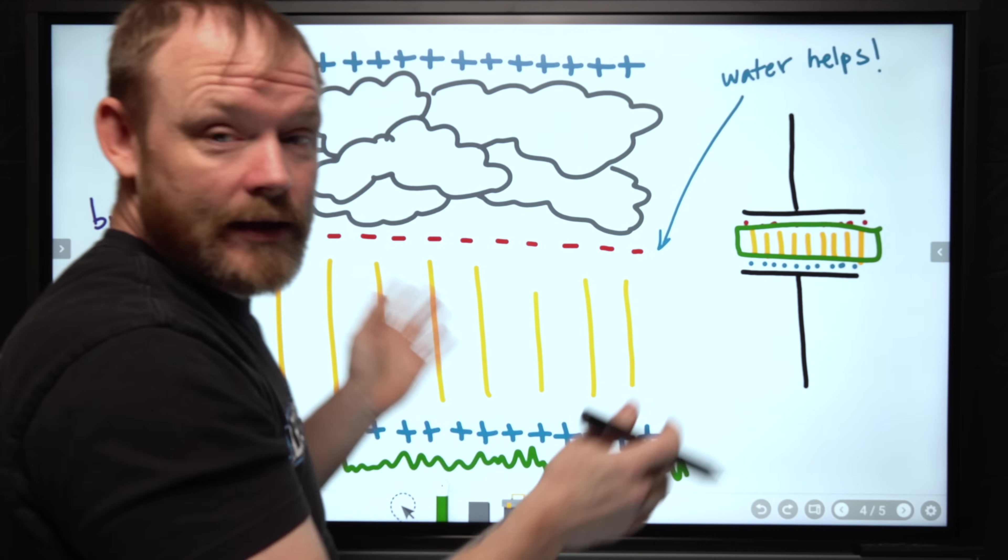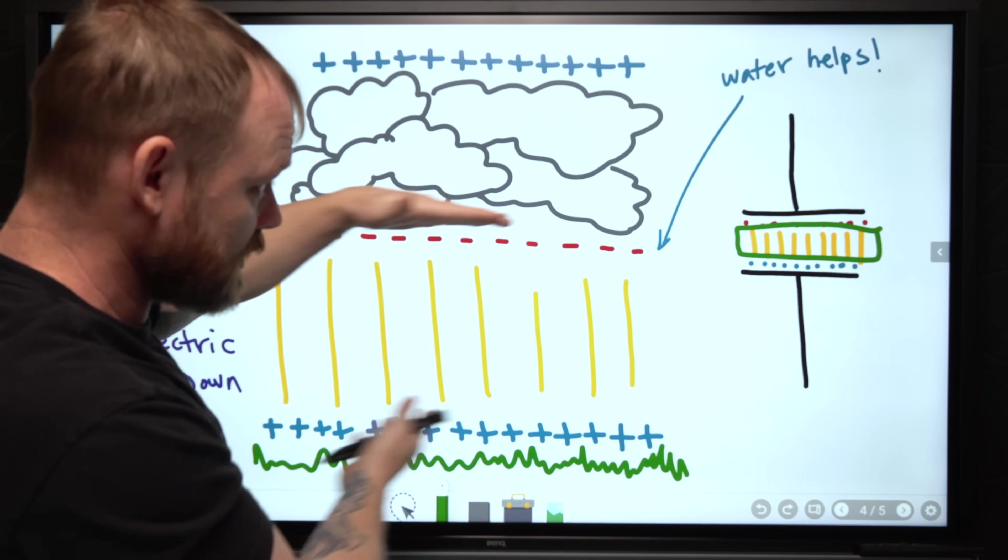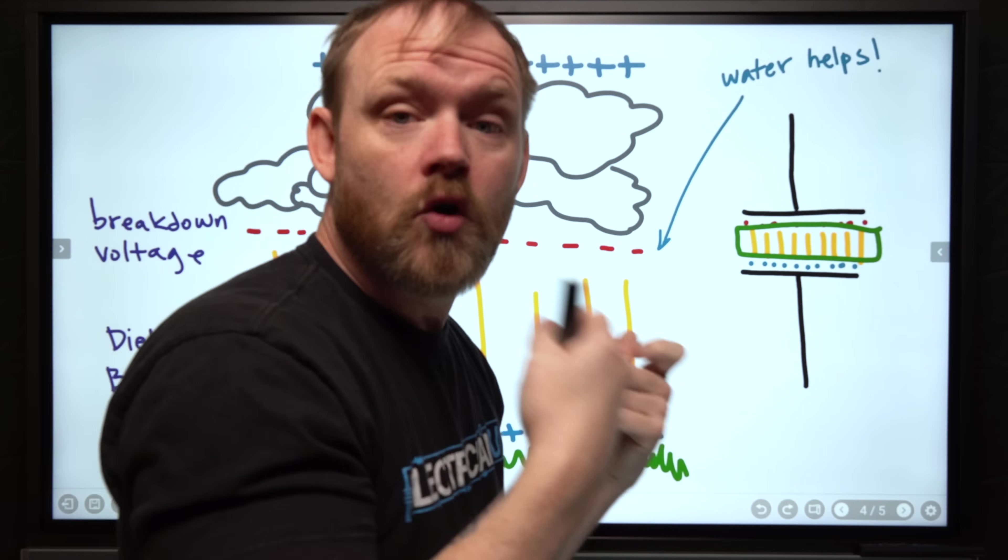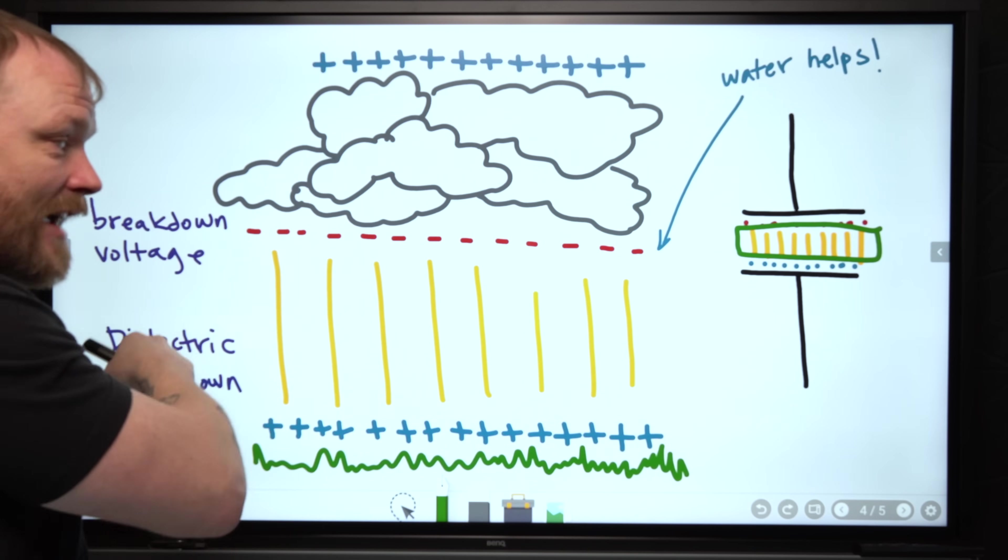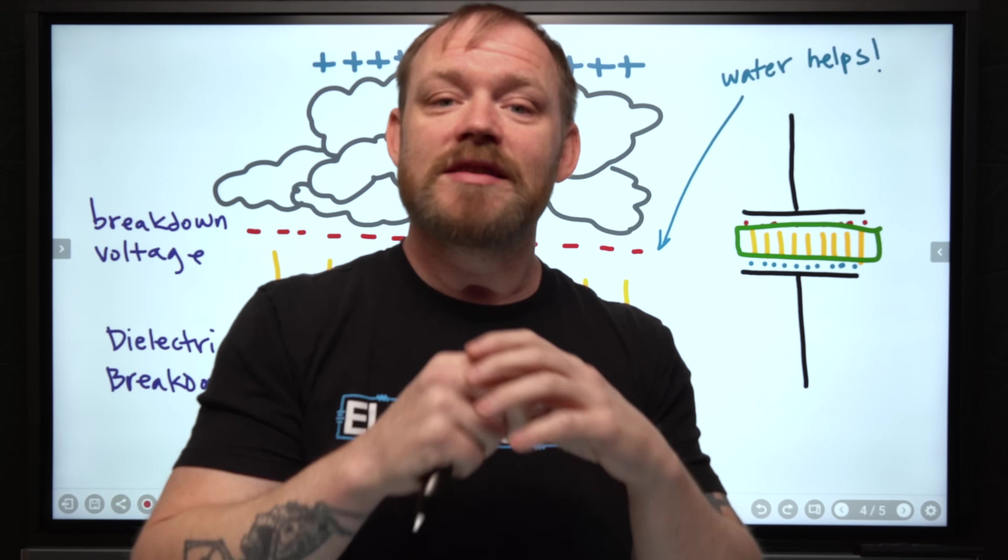With air though, we don't have this solid material insulator thing. Air kind of acts like an insulator most of the time, but during a situation like this we can raise the voltage, the difference of potential between earth and the bottom of this cloud so much that it actually breaks down the dielectric and it creates a pathway through to the ground.